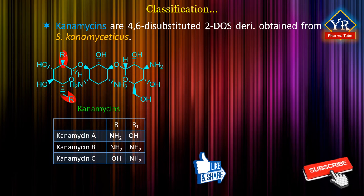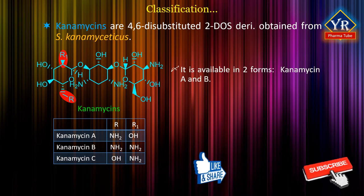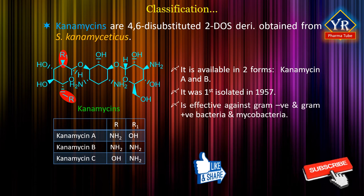Paramomycin has been useful against dysentery and gastroenteritis caused by these organisms since no intestinal absorption occurs. The kanamycins are 4,6-disubstituted 2-deoxystreptamine derivatives obtained from Streptomyces kanamyceticus. It is available in two forms, kanamycin A and kanamycin B. Kanamycin was first isolated in 1957. It is effective against both gram-negative and gram-positive bacteria as well as against mycobacteria. Its use has been superseded by tobramycin and gentamicin.